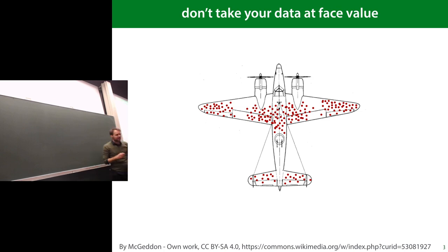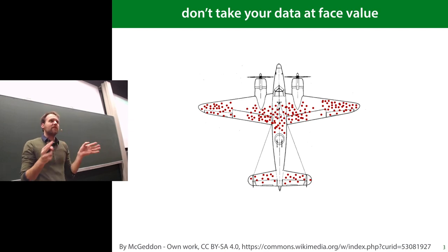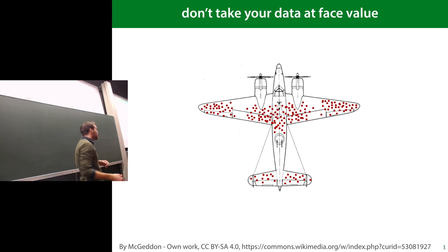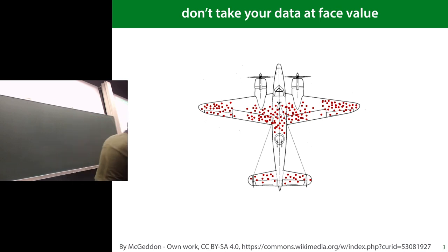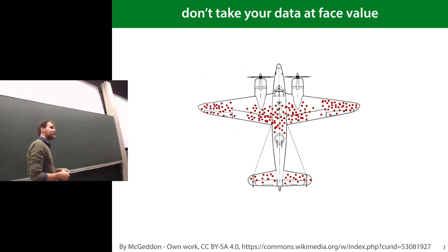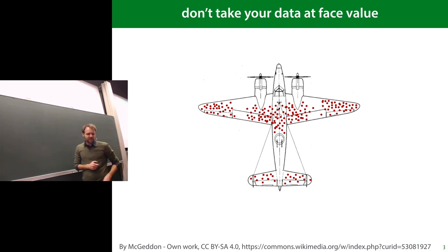The answer is: you're not looking at all of the planes. You're not getting a nice distribution over where a plane is likely to be hit — you're only looking at the planes that came back. If a plane gets hit in certain places it can still fly; if it gets hit elsewhere, the plane goes down. So reinforce where you don't see damage. This is called survivorship bias: if you look only at survivors, your data will be very skewed.